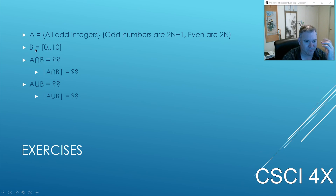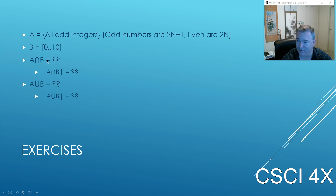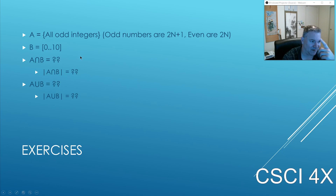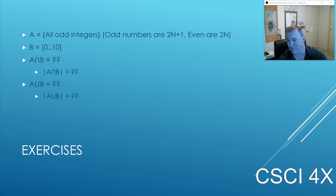The union of A and B is all odd integers and all the numbers from zero to 10, removing duplicates. So it's all odd integers — negative one, negative three, negative five, one, three, five, seven, nine, eleven, thirteen, fifteen, seventeen, nineteen, and so on — plus the even numbers from zero to ten sprinkled in: zero, two, four, six, eight. The size of this is infinite — on canvas for your quizzes you type in negative one, which is not mathematical, but it makes it easy to enter infinity.